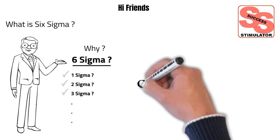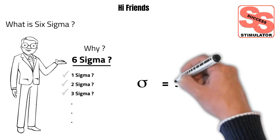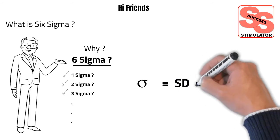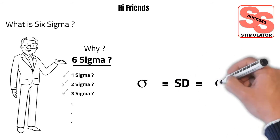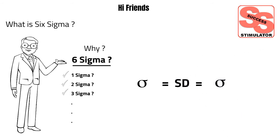In general, sigma is nothing but standard deviation — meaning sigma equals standard deviation, or standard deviation equals sigma. This is a high-level definition of sigma.